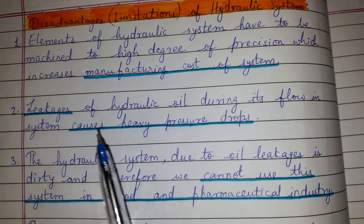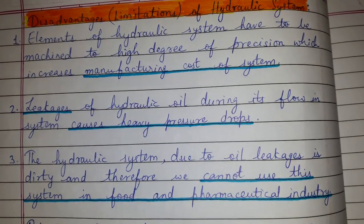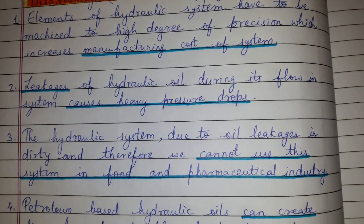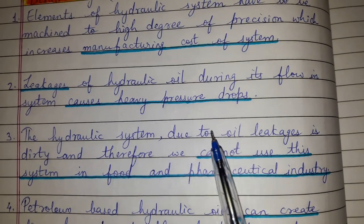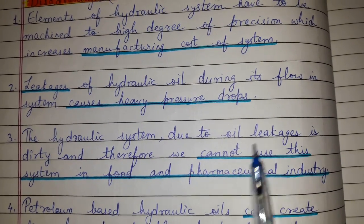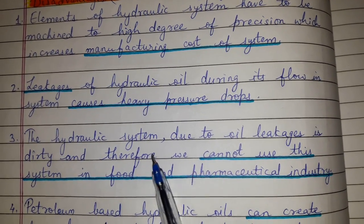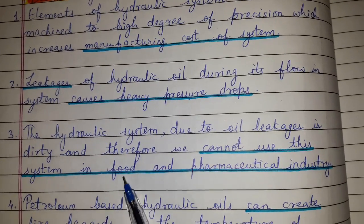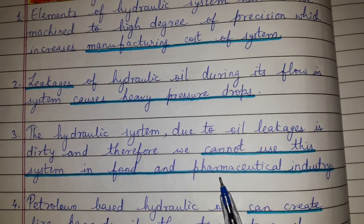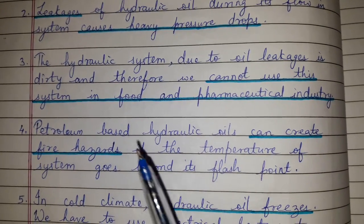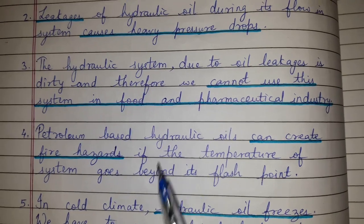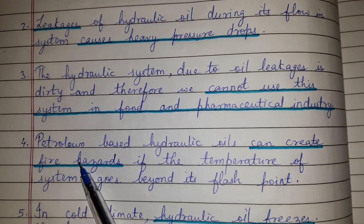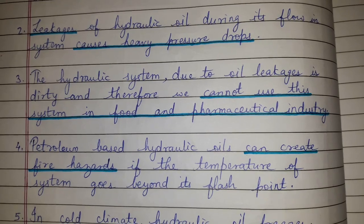Leakages of hydraulic oil during its flow in the system cause heavy pressure drop. Due to oil leakages, the hydraulic system is dirty, and therefore we cannot use it in the food and pharmaceutical industry.